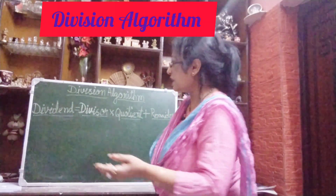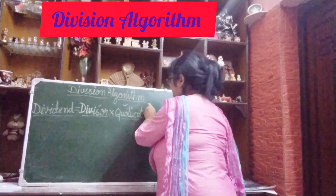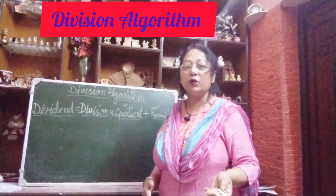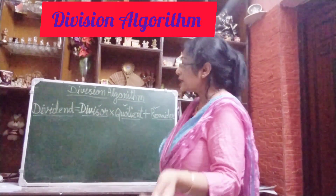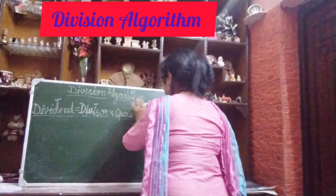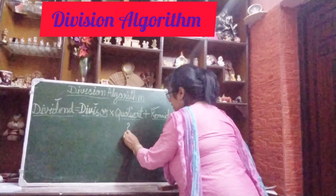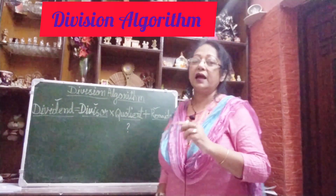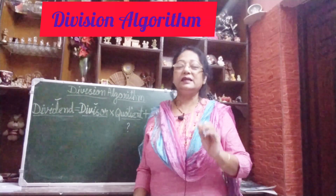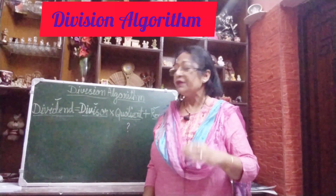Now, suppose three values are given and you are asked to find the dividend — you can easily find it. But sometimes the dividend and remainder are given and you are asked to find the quotient. This is when students get confused and make mistakes. So this type of sum we will also do today.